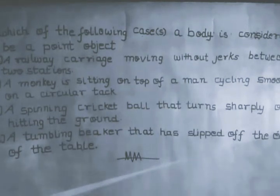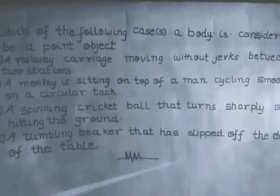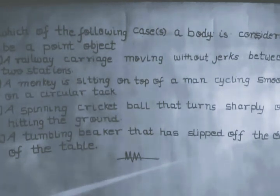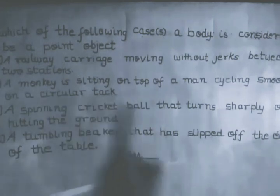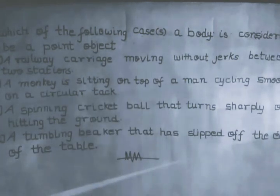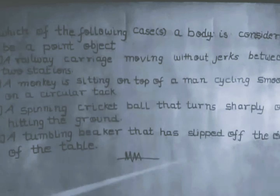Case C: a spinning ball — it is spinning, so the modified definition does not allow this as a point object. Case D: a tumbling beaker — it is directly tumbling, so there must be some turning effect, some kind of rotation. So, for case A with the given condition of moving without jerks, we can consider that carriage as a point object. A monkey sitting on a man cycling smoothly on a circular track will also be considered a point object. But not cases C and D, because they hint at other dimensional motion that is not large enough compared to the size of the object.